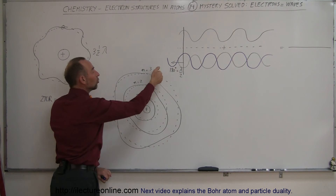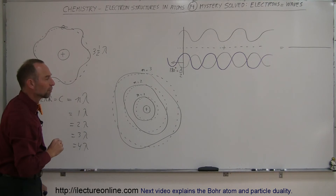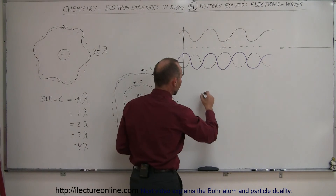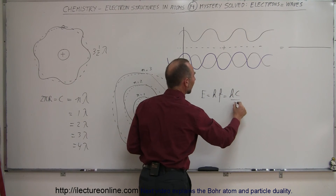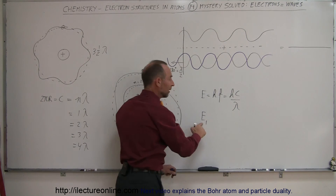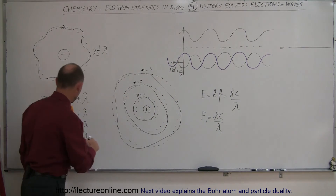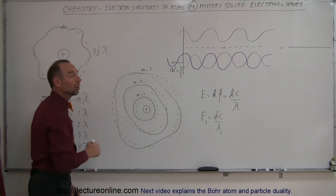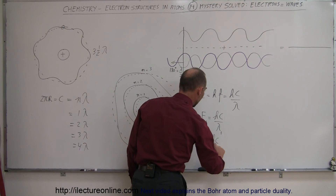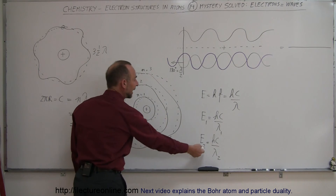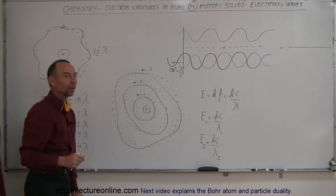And if it gets an additional energy boost to jump to the next level, it'll have an energy state where one complete orbit around the nucleus will be equal to exactly three wavelengths. Notice that the energy of a photon — which by Planck was determined to be h times the frequency, equal to hc divided by lambda — means that the energy of the first level is equal to hc divided by lambda 1, where lambda 1 is exactly equal to the circumference of the innermost energy level. And energy 2 is equal to hc divided by lambda 2.